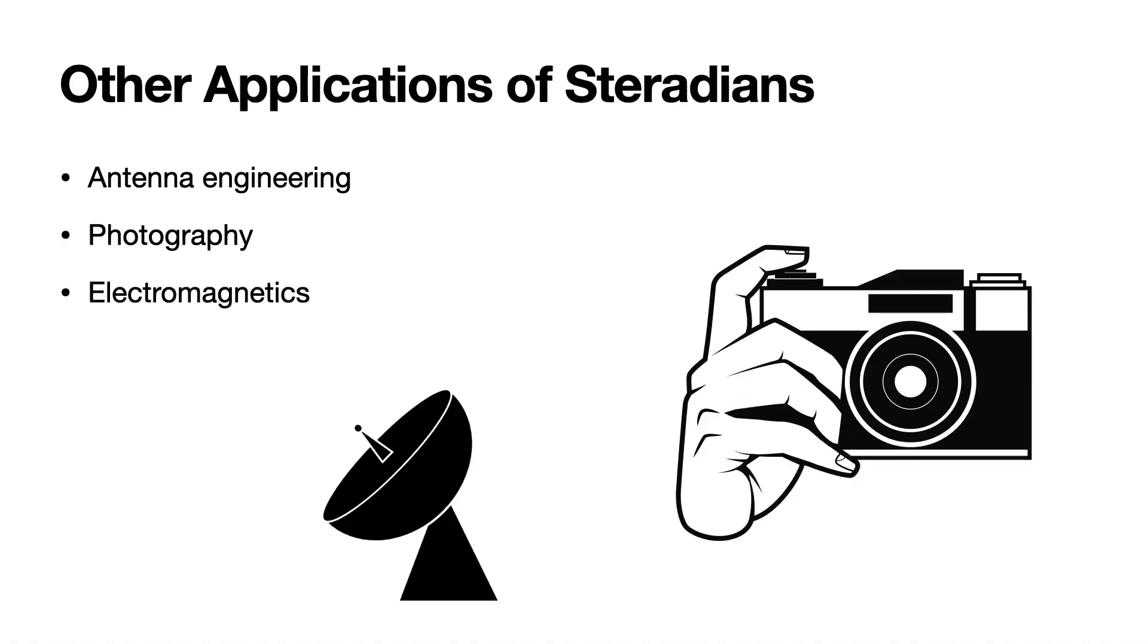We also found out that steradians have many other real life examples. Steradians are also used in antenna engineering for properties such as the directivity of an antenna. Steradians also have useful application in photography, specifically for calculating luminance from a light source and calculating the necessary light exposure to properly light up a scene. And finally, they're used in electromagnetics to represent scaling of a sphere.